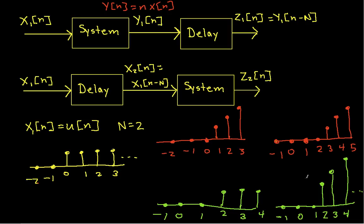Another way of thinking about whether a system is time-varying is: does it depend on what time my signal goes through the system? Here it clearly does, because the time the signal goes through the system determines the values it gets multiplied by — the n's. Starting at time 0 gives a different set of values than waiting and starting at time 2. So this system is not time invariant.